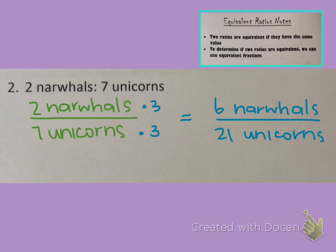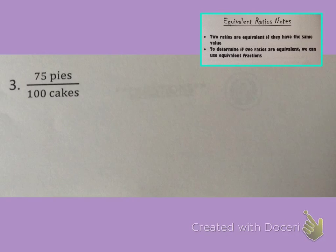So, 6 narwhals to 21 unicorns is equivalent to 2 narwhals for every 7 unicorns. Now we have this third and final ratio, 75 pies to 100 cakes, and that sounds delicious, but we need to come up with an equivalent ratio here. And so, I'm looking, it's already written in fraction form, which is fantastic, one last step for us. And as I look at the numbers in this ratio...